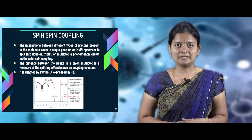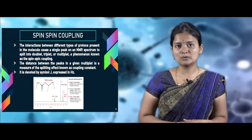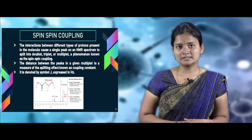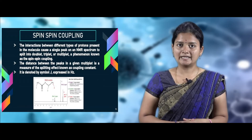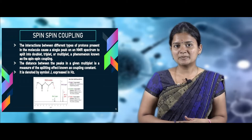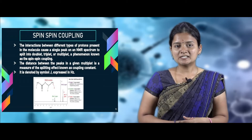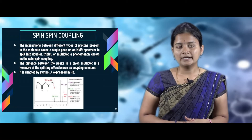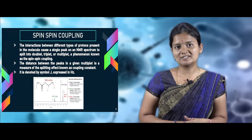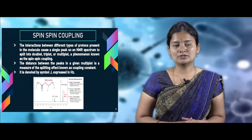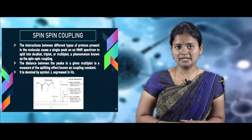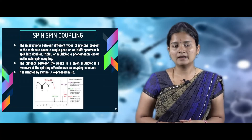The second concept is spin-spin coupling. The interaction between protons in a molecule gives rise to a single peak in the NMR spectrum, which is then split into a doublet, triplet, or multiplet. The distance between two peaks in a spectrum is called the J coupling constant, expressed as J and measured in hertz. The picture shown here has three peaks: a singlet, a quartet, and a triplet, having one, four, and three peaks respectively, based on the H atoms present in the sample.